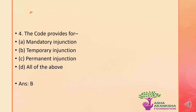Let's now move on to the next question: the Code provides for which of the following? The options are A. Mandatory injunction, B. Temporary injunction, C. Permanent injunction, or D. All of the above. The correct answer is option B: the court provides only for temporary injunction and no other form of injunction.